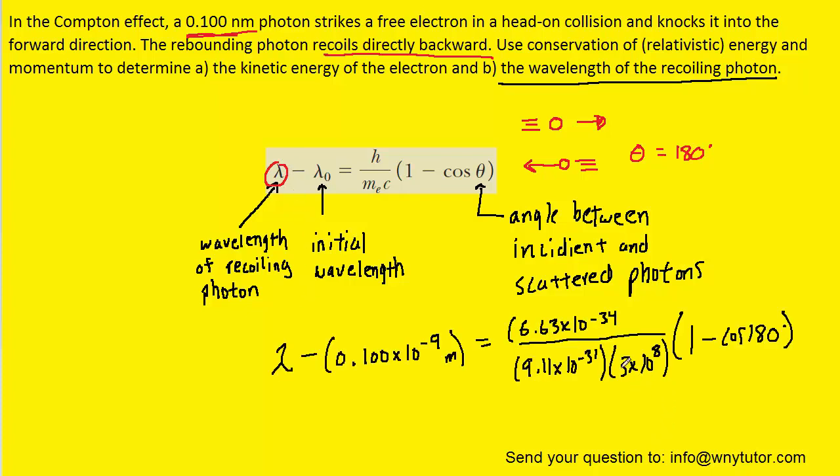So here are the values plugged in. Notice that Planck's constant, the mass of the electron, and the speed of light are all in their standard units. We have omitted those units for clarity. On the left-hand side of the equation, we have to make sure that we change the nanometers into the standard unit of meters. So we've multiplied the 0.1 by 10 to the minus 9.